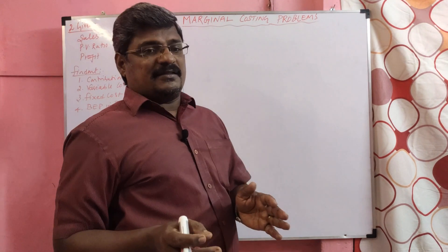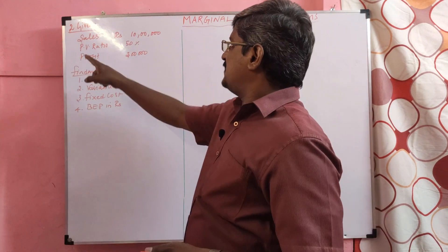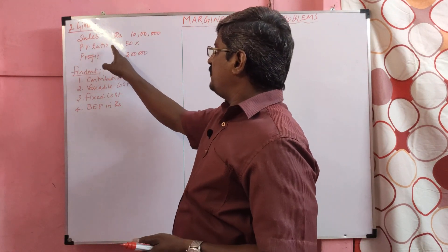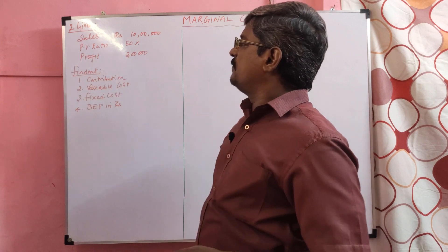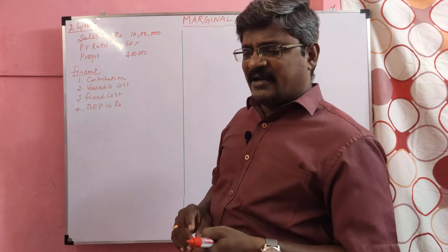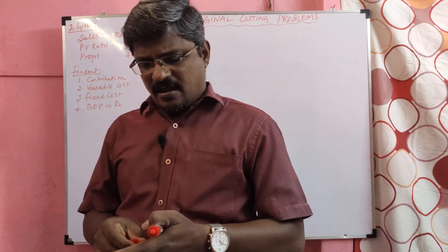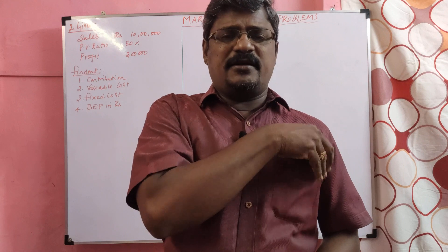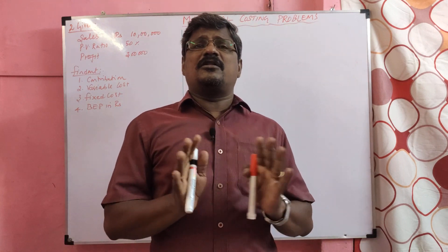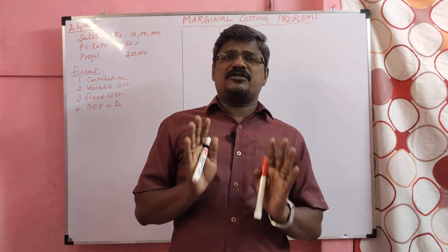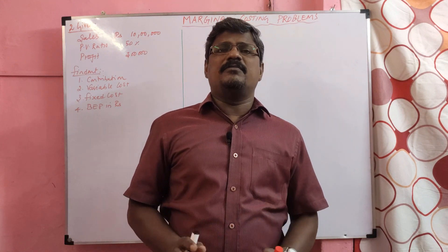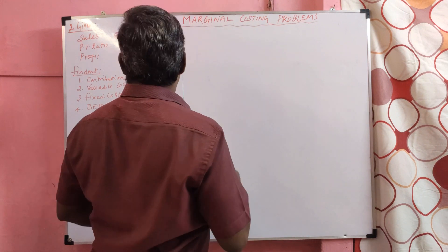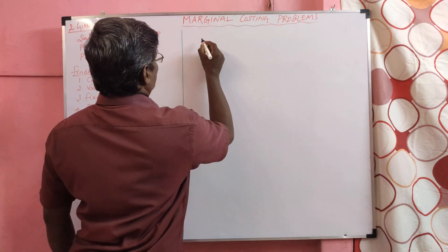Here three items are given: sales are given, profit volume ratio is given, and profit is given. I have said many times — when they ask you to find the breakeven point, please don't try to solve the problem directly. Before solving the problem you should draw the format. Now I am going to draw the format. Listen carefully.